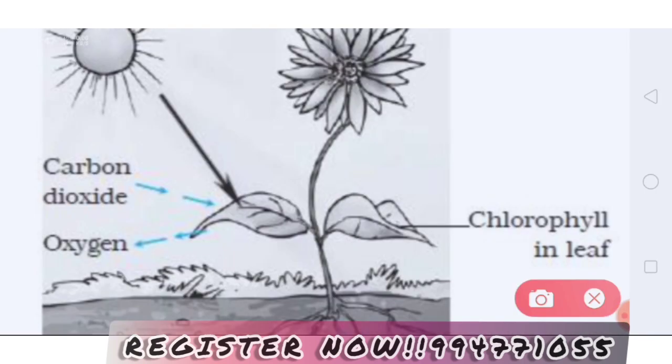In autotrophic nutrition — we know this plant: this is the flower, this is the leaf, this is the stem, this is the root. These are the parts of the plant.